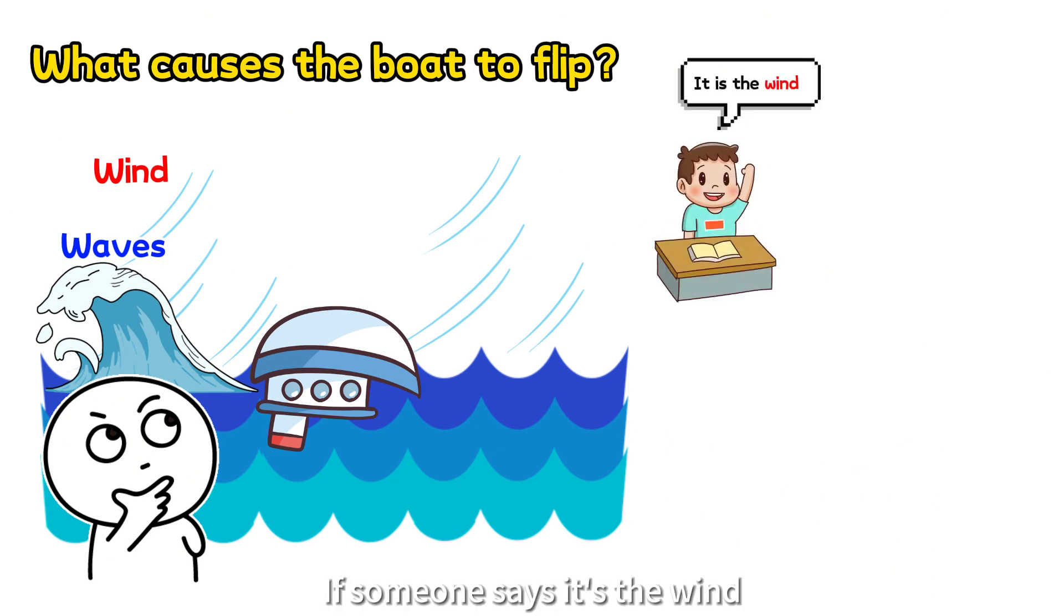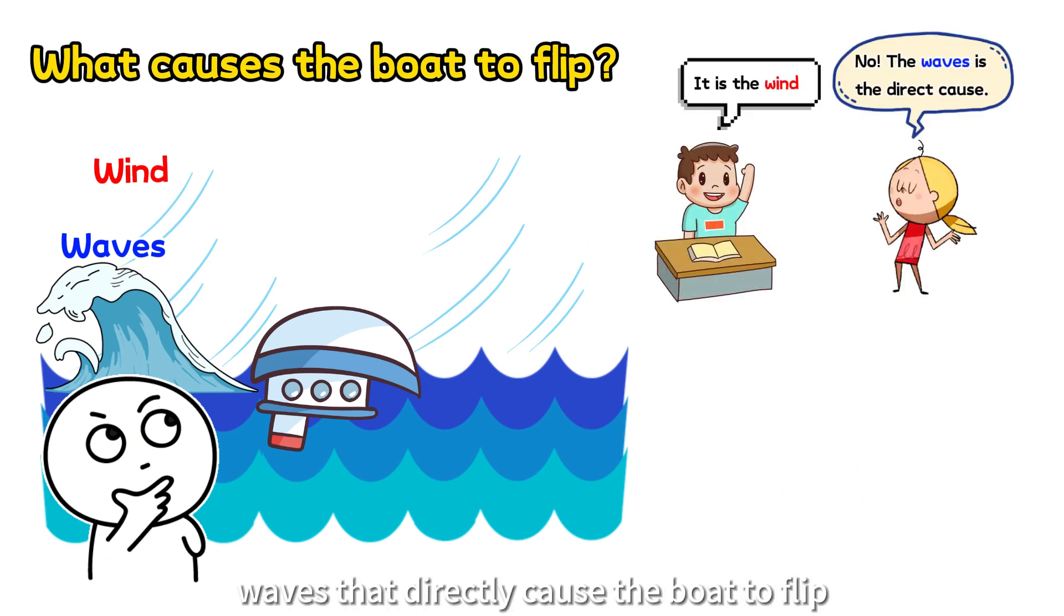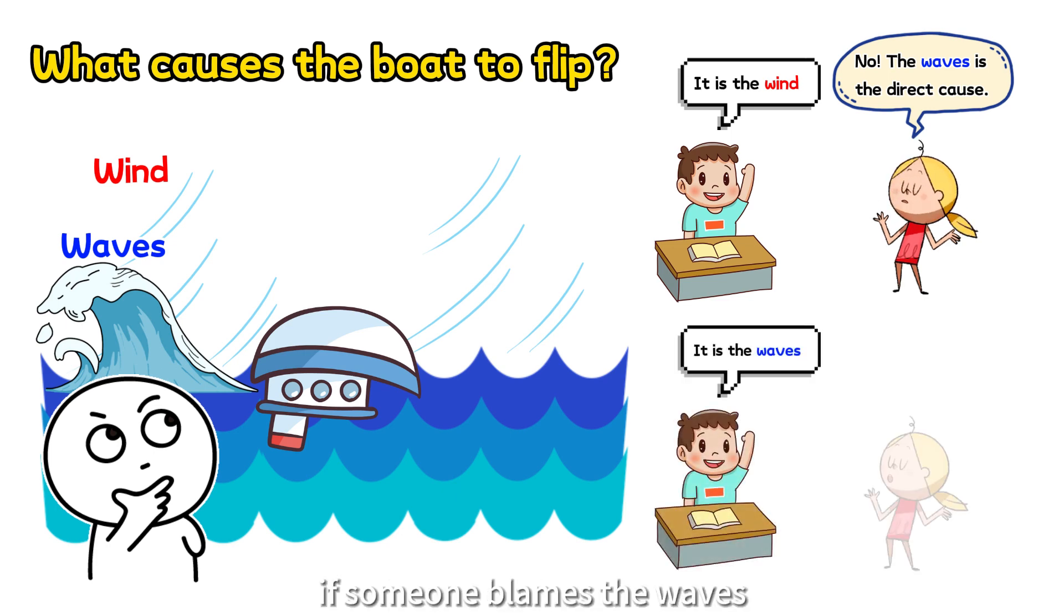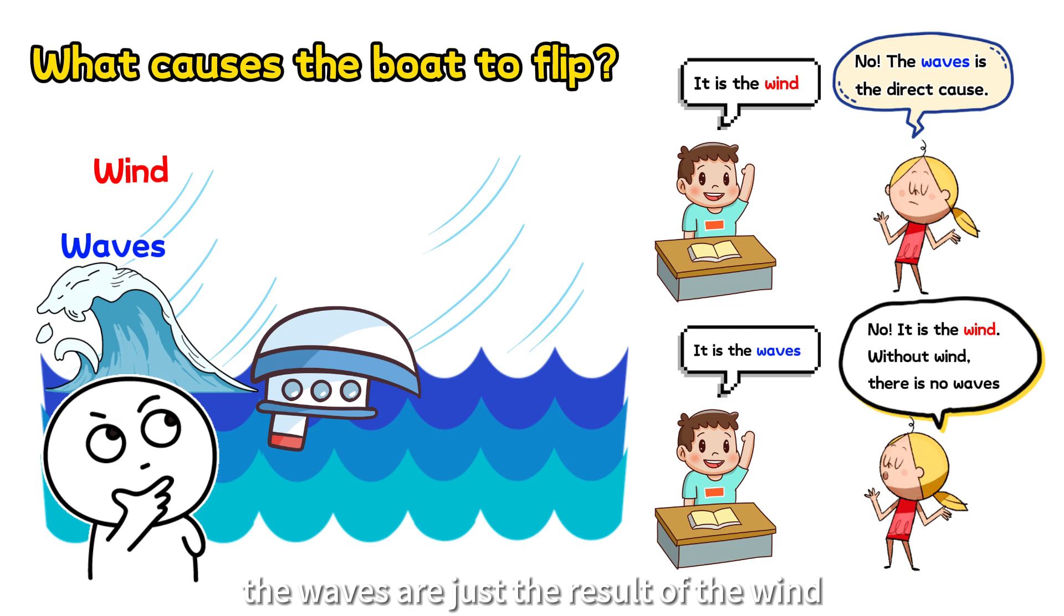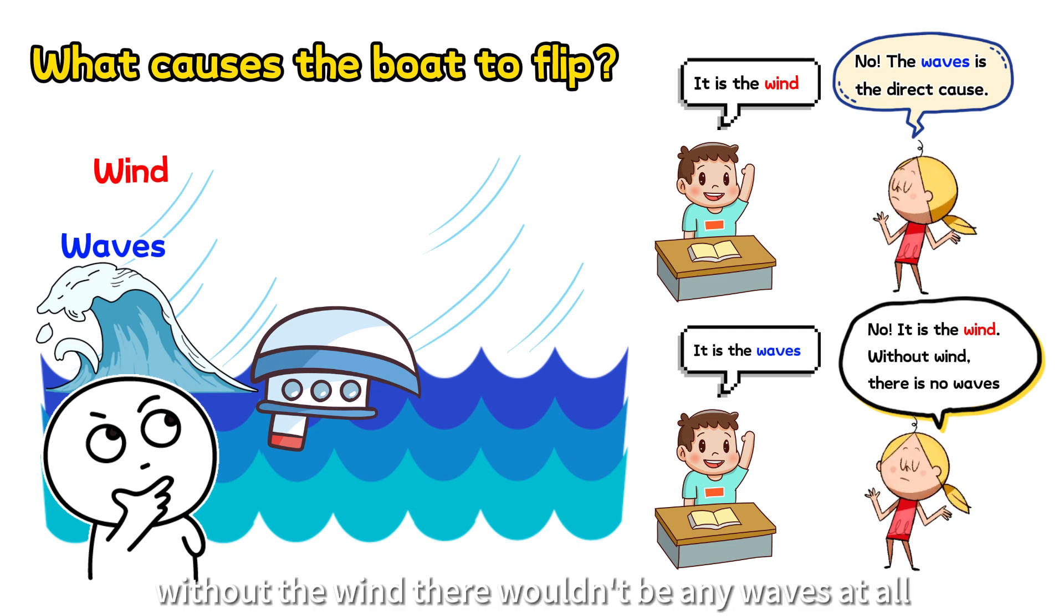If someone says it's the wind, others might argue that it is the waves that directly caused the boat to flip. On the other hand, if someone blames the waves, others might counter that the waves are just the result of the wind. After all, without the wind, there wouldn't be any waves at all.